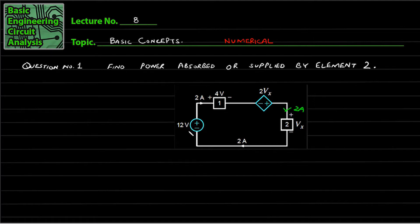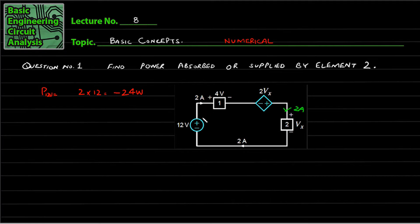Power utilized in the 12-volt source: P of 12-volt source equals 2 into 12, that will be 24 watts. Now I will mark a negative sign — why negative sign? Because current is entering on the negative side, or leaving from the positive side. So this will be negative, meaning this is our source.